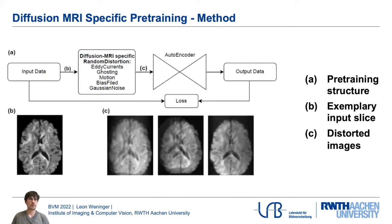We present a pre-training procedure based on an auxiliary data set of high-quality images that we randomly distort with artifacts often found in clinical images, such as eddy currents, ghosting, motion artifacts, bias fields, and Rician noise, and then train an autoencoder to reconstruct the original undistorted image from these distorted images. In the bottom row, we see such an example: on the left side the original image, and on the right side three distorted images where the autoencoder needs to remove the noise.